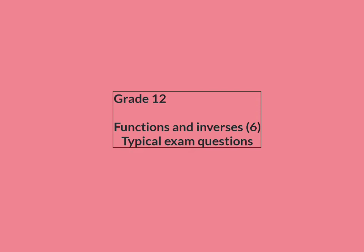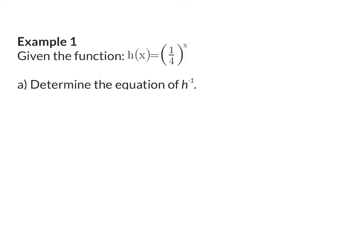In this lesson on functions and inverses, we're going to have a look at typical exam questions. Example 1. Given the function h(x) equals a quarter to the power of x, our first question: determine the equation of h to the power of minus 1.